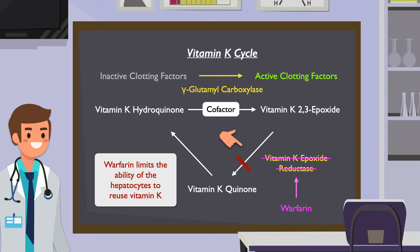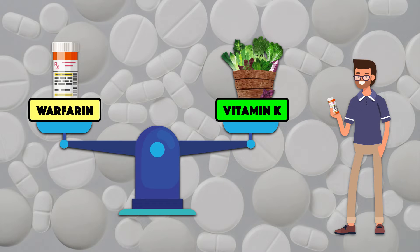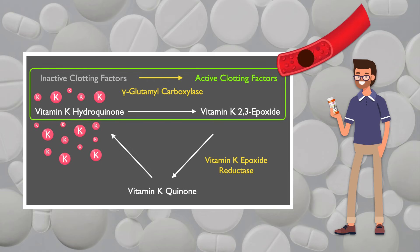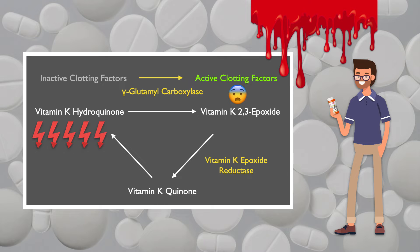As a result, warfarin limits the ability of the hepatocytes to reuse vitamin K. This limits the capacity of gamma-glutamyl carboxylase to activate the clotting factors and decreases the amount of blood clotting that can occur. Obviously, if a patient is prescribed warfarin, this is the desired outcome. However, an appropriate balance must be achieved. If vitamin K-hydroquinone availability is excessive, unwanted clotting can occur; if it's inadequate, too few clotting factors will be activated, leading to unwanted bleeding.